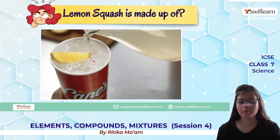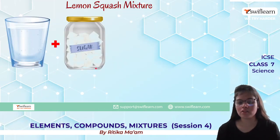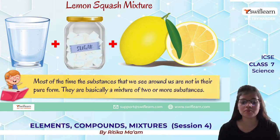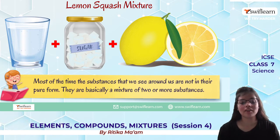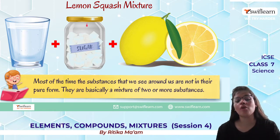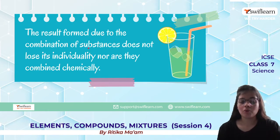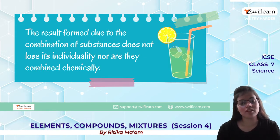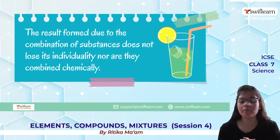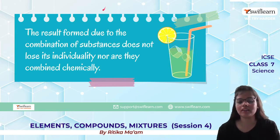Now, what is lemon squash made up of? Lemon, obviously, water, sugar, salt, etc. Lemon squash is a mixture, and I am absolutely correct saying so. Most of the times, the substances we see around us are not in their pure form — they are a combination or a mixture of two or more substances. The result formed after combining substances is known as a mixture. It does not lose its individuality, nor are the components combined chemically — it is done through physical methods.